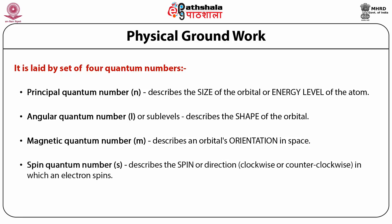The spin quantum number, represented by small s, is the fourth quantum number, which completely describes the quantum state of an electron. It describes the spin or direction — clockwise or anticlockwise — in which an electron spins, with two possible directions of plus half and minus half.